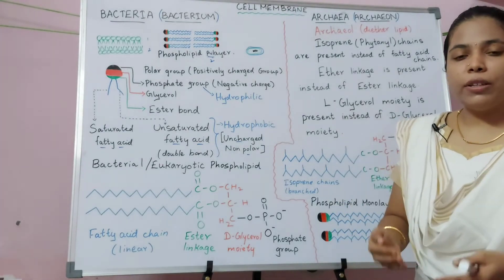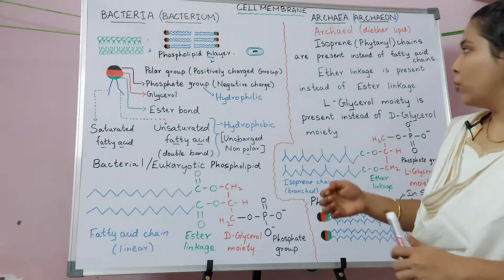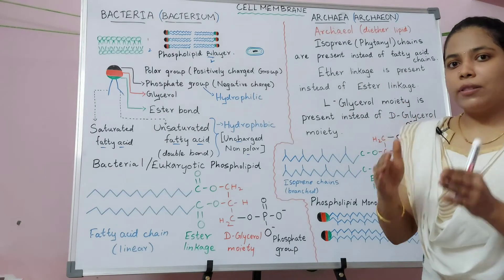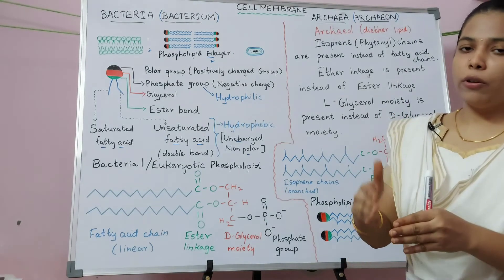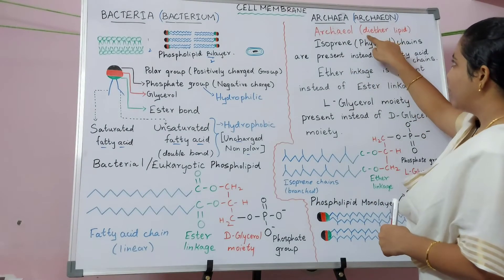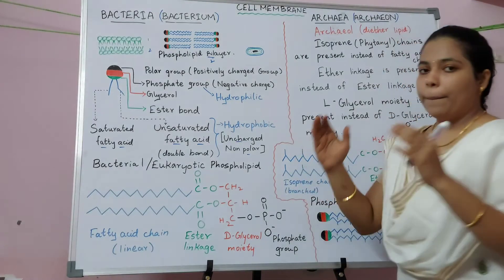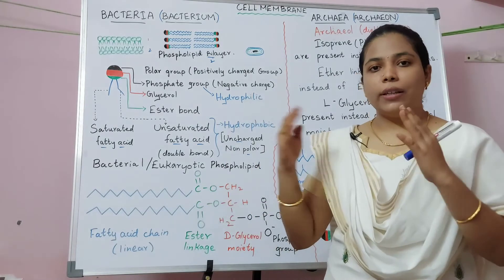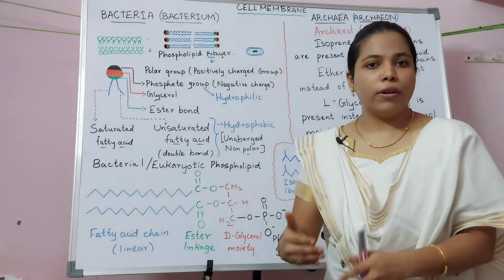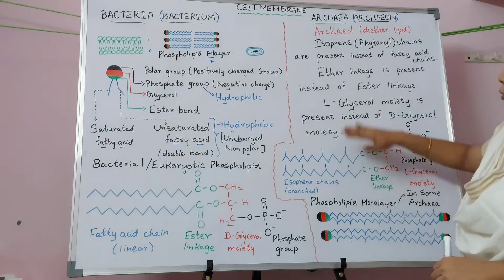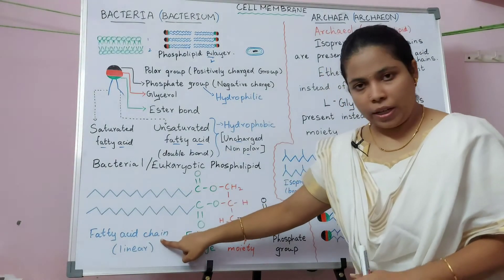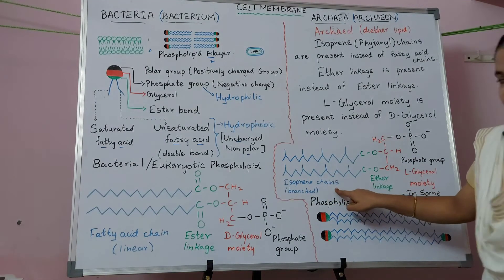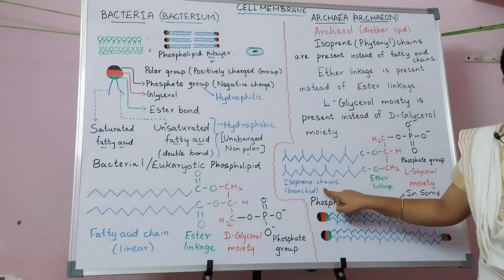Now we will look at the archaeal cell membrane. The archaeal cell membrane has a special feature called an archaeal lipid — a diether lipid — which is unique to archaea and makes them different from bacteria and eukaryotes. Archaea have the same basic phospholipid structure but differ in their chemical components. In archaea, the fatty acid chain is replaced with an isoprene chain, which is a branched chain.